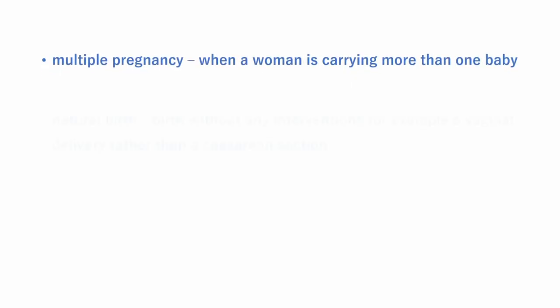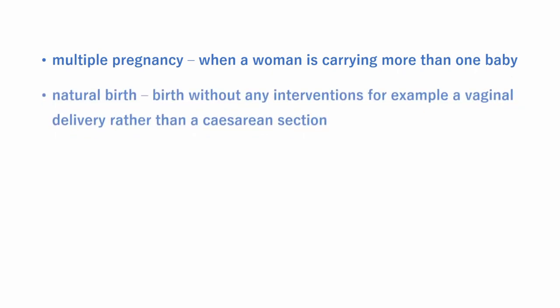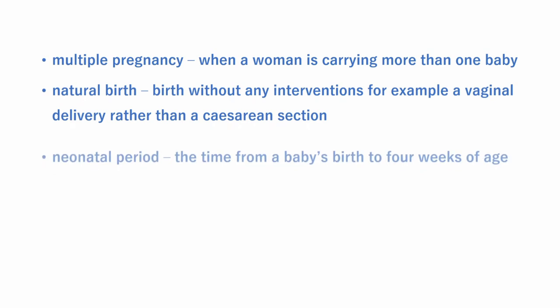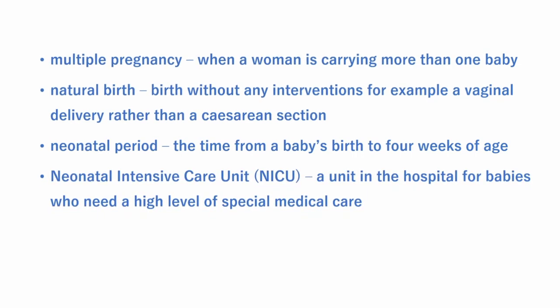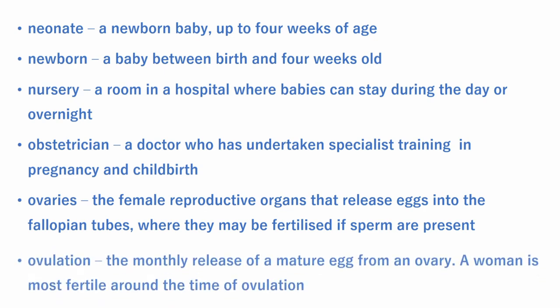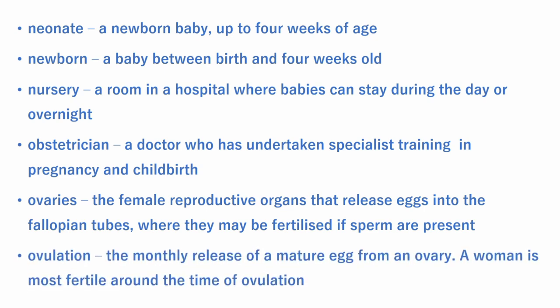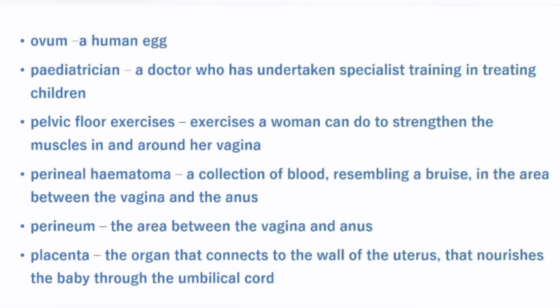Multiple pregnancy is when a woman is carrying more than one baby. Natural birth is a vaginal delivery rather than a cesarean section. Neonatal period is from a baby's birth to four weeks of age. Neonatal intensive care unit (NICU) provides a high level of special medical care for babies. Ovaries are the female reproductive organs that release eggs into the fallopian tubes, where they may be fertilized if sperm are present. Ovum is a human egg. Pelvic floor exercises are exercises a woman can do to strengthen the muscles in and around her vagina. Perineal hematoma is a collection of blood resembling a bruise in the area between the vagina and the anus. Perineum is the area between the vagina and the anus. The placenta is the organ connected to the wall of the uterus that nourishes the baby through the umbilical cord, providing oxygen and nutrients to the growing baby from the mother's bloodstream.